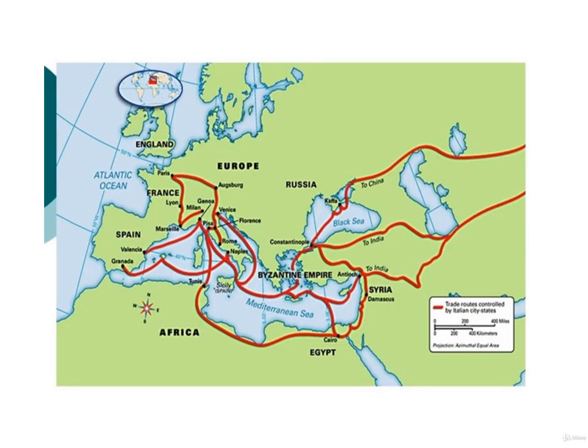The end of the Crusades left many European princes holding new estates in the Eastern Mediterranean. Trade was renewed, and the flow of money created a need for merchant bankers. Blessed by their locations, Venice and Genoa became major centers of Mediterranean commerce.